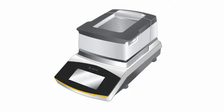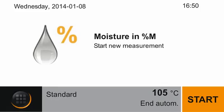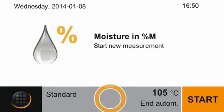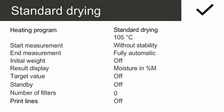Viewing and adjusting current parameters. Please tap on the function bar below. The current parameters are displayed. The parameters shown here are suitable for moisture determination on a variety of substances.